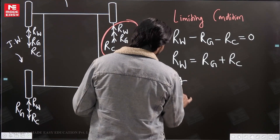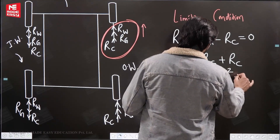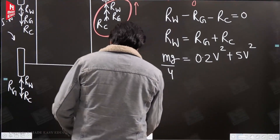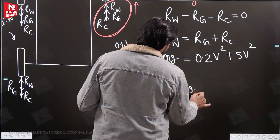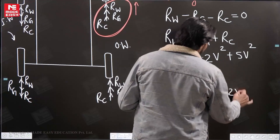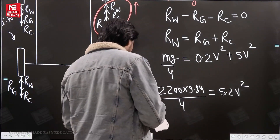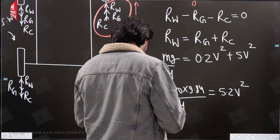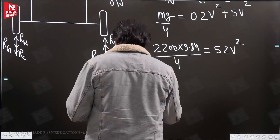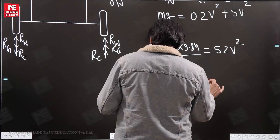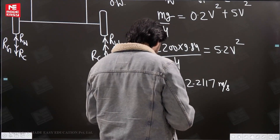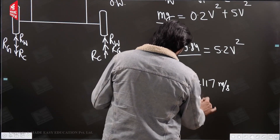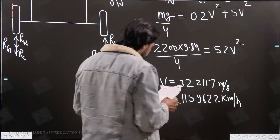Writing the equation: Rg plus Rc equals 0.2V² plus 5V², which gives 5.2V². Setting this equal to Rw = (2200 × 9.81) / 4, we solve: V² = (2200 × 9.81) / (4 × 5.2), giving V = 32.2117 m/s. Converting to km/h by multiplying by 18/5 gives approximately 115.96 km/h. So the best option is 116 km/h.